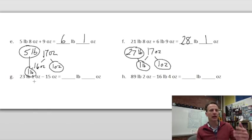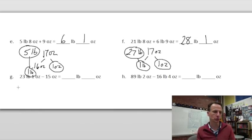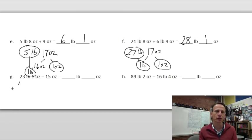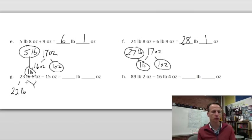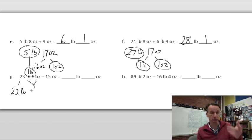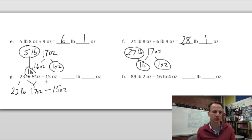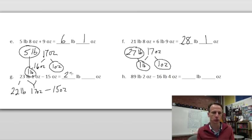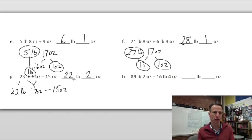Problem 1g: 23 pounds one ounce minus 15 ounces. We can't do one minus 15, so we regroup. Leave 22 pounds alone, and take the 23rd pound as 16 ounces combined with the one ounce — that's 17 ounces. Now subtract 15 ounces: 17 minus 15 is 2 ounces. Answer: 22 pounds 2 ounces.